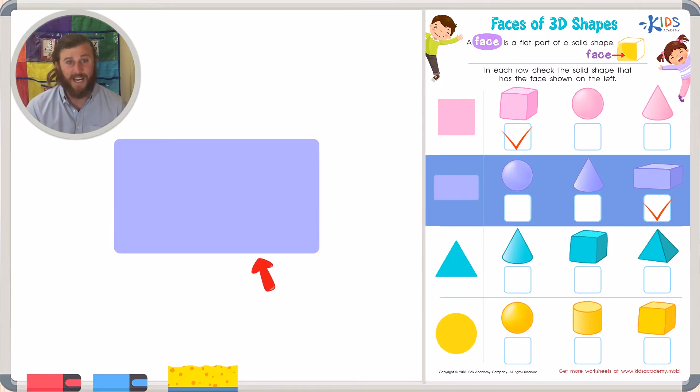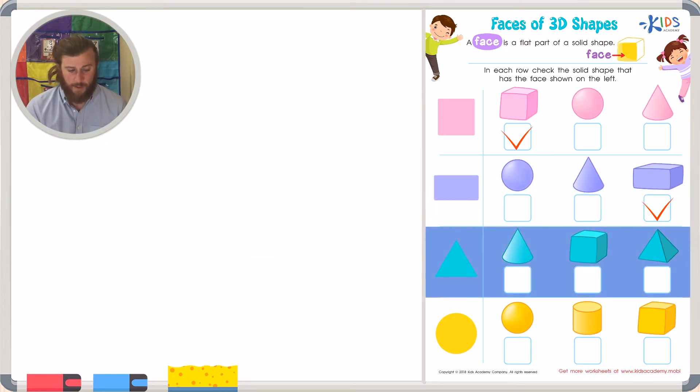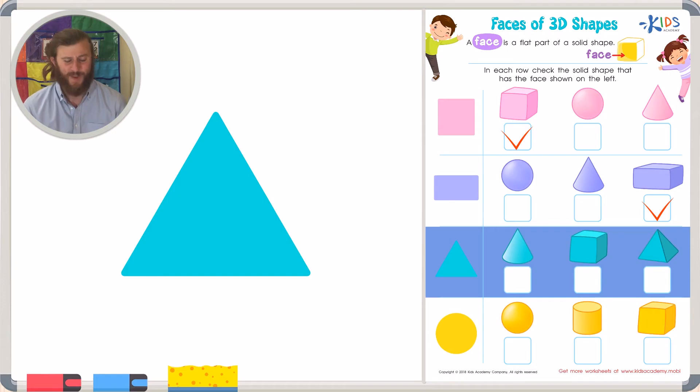Our next face is triangular, so our triangular face has to match up with a shape that has this triangular face. Let's check out our shapes. Our first shape is a cone. Now, the cone shares some similarities with the triangle the way that it looks, but it does not have a triangular face, so this cannot be correct.